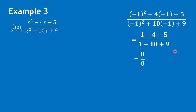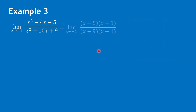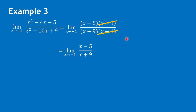Let us now do factoring for the given function. To factor the numerator we have x minus 5 times x plus 1, and for the denominator we have x plus 9 times x plus 1. We can now cancel x plus 1, giving us the limit of x minus 5 over x plus 9 as x approaches negative 1.